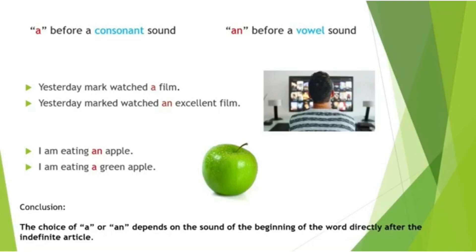When there is an adjective before the noun, the rule is: we look at the word directly after the article. We look at its pronunciation. 'Excellent' starts with a vowel sound, so we say 'Mark watched an excellent film'. Another example: 'I am eating an apple' — 'apple' starts with a vowel sound so we use 'an'. Now if we add the adjective 'green': 'green apple' — 'green' starts with a consonant sound, so we say 'a green apple'. The choice of 'a' or 'an' depends on the sound of the next word.